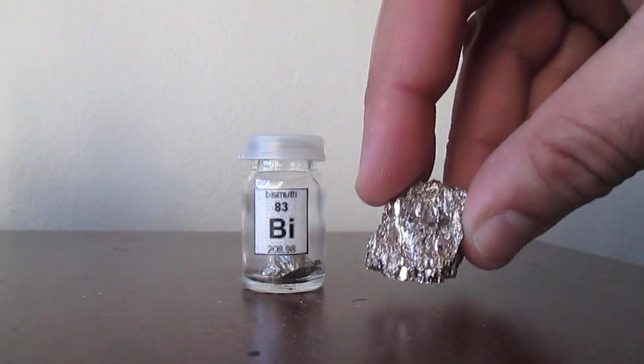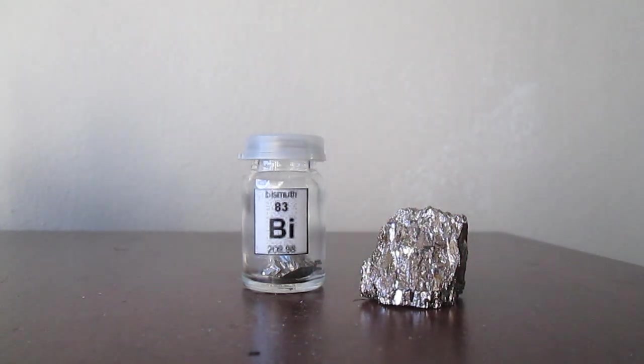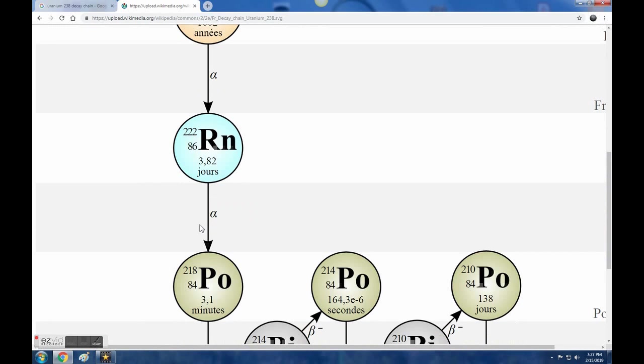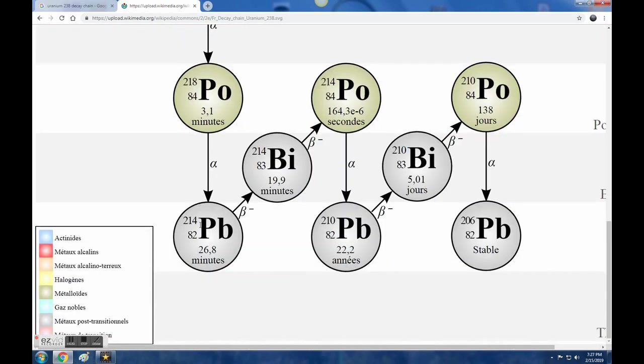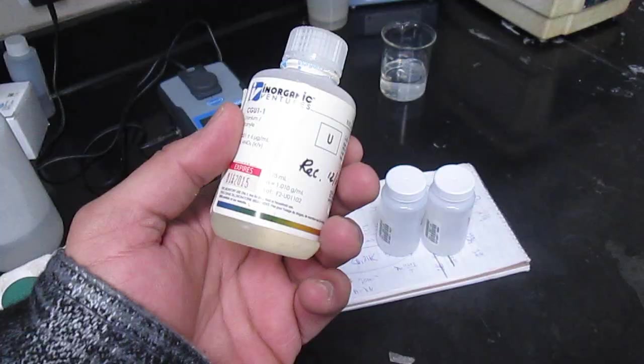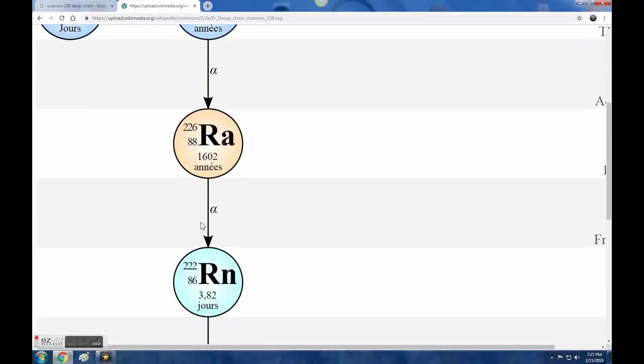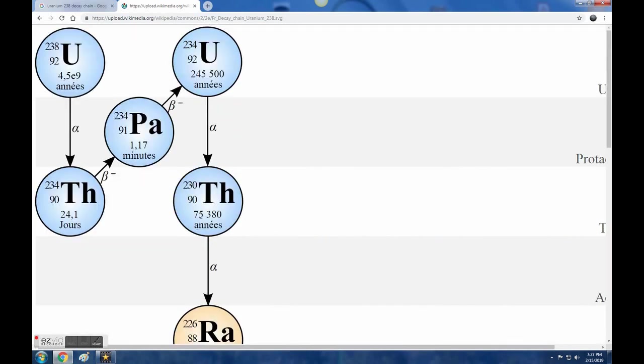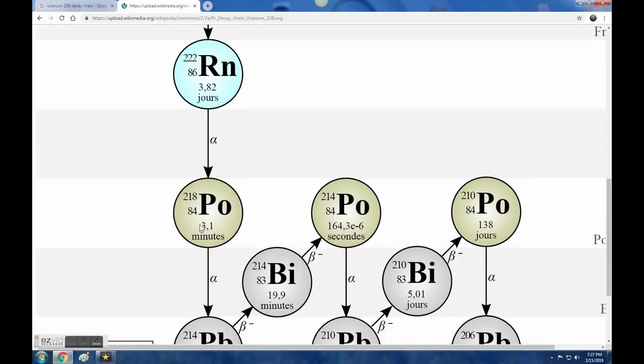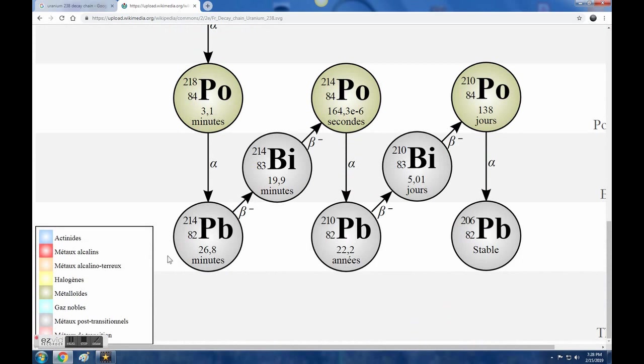Enter Bismuth-214, one of the decay daughters of Uranium-238 with a half-life of 20 minutes. This radioisotope builds up in uranium ore where it can be separated to produce this very pure uranium standard right here. Now, from the time of its isolation, the decay family of uranium is reset and the secular equilibrium has to build up again the activity for each of its isotopes.